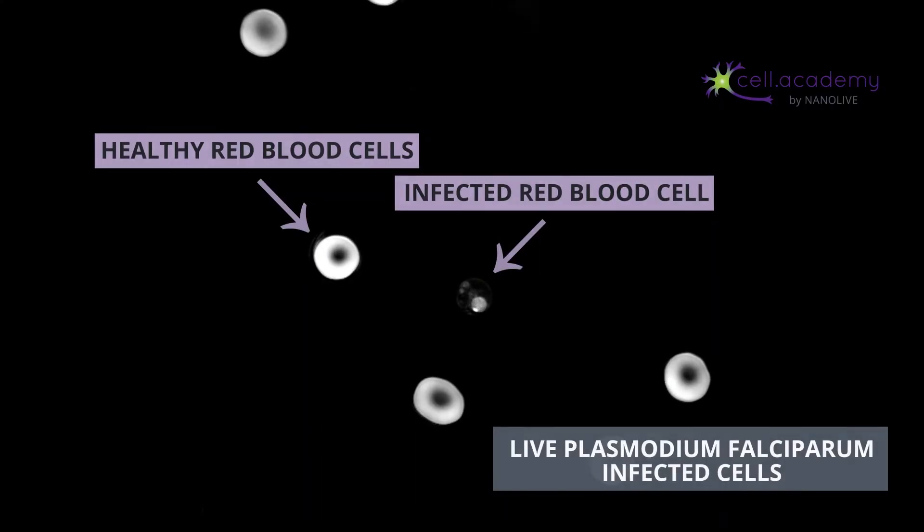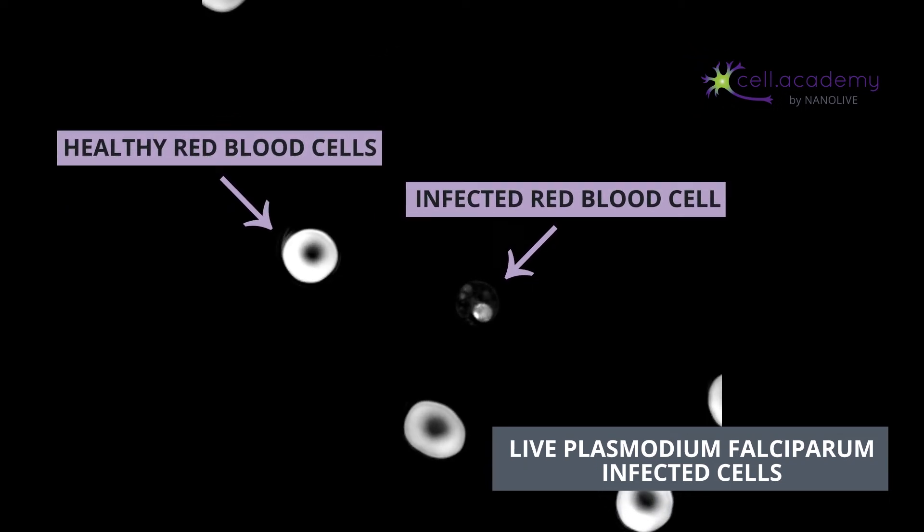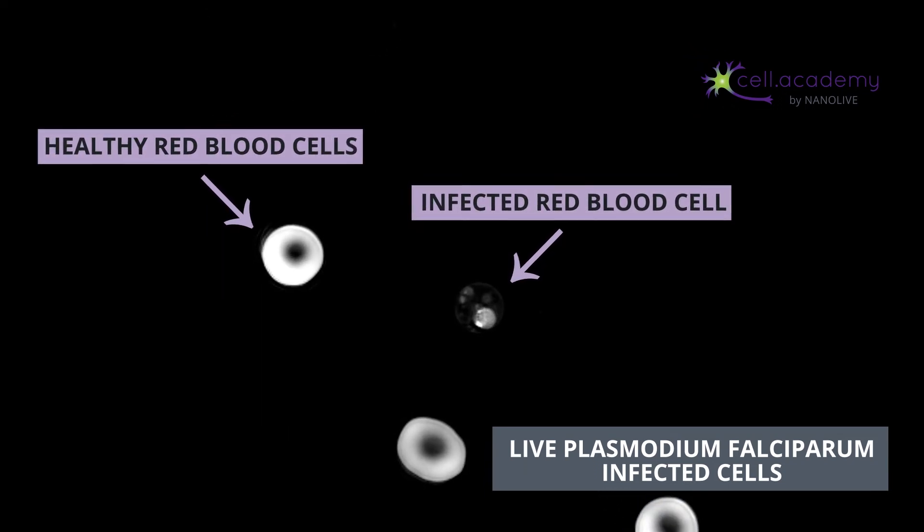If you follow our channel regularly, this may sound familiar to you. In our Malaria Day video, we explain that malaria is caused by Plasmodium parasites that are transmitted to humans through the bite of infected female Anopheles mosquitoes. Once in the bloodstream, Plasmodium also targets red blood cells, but with a different purpose than trypanosoma. Plasmodium evades the immune system by hiding within the red blood cell, where they can proliferate undisturbed.